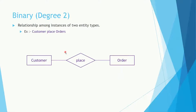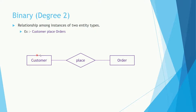This is the binary relationship type, where the relationship type is involved by two entity types. For example, a customer places orders — customer and order are the two entity types involved.